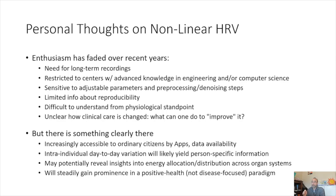Just like the application we saw for lactate thresholds for exercise, I think the same can be extended to many other conditions. With the availability of wearables and apps, I predict there will be much more activity in this area. DFA alpha and these fractal scales and nonlinear measures can potentially provide insights into energy allocation distribution across organ systems. The theory behind these measures is that the heart is sensitive to systems that operate across multiple timescales — respiration operates at higher scales, baroreflex at lower frequencies, and thermal regulation and the renin-angiotensin system at very low frequencies. So if the heart functions well, it operates across all these scales, and nonlinear measures should do a particularly good job assessing across all of them.